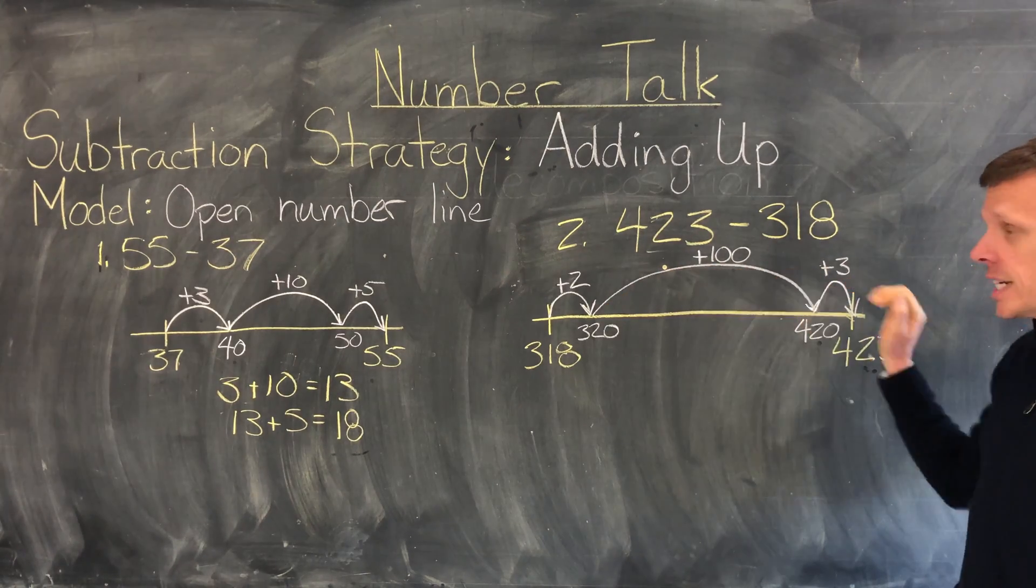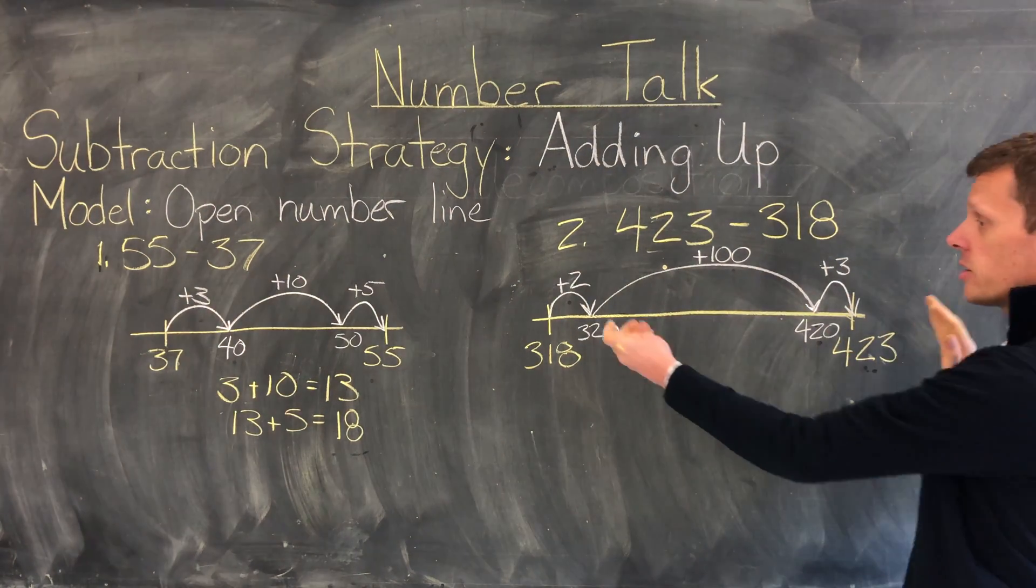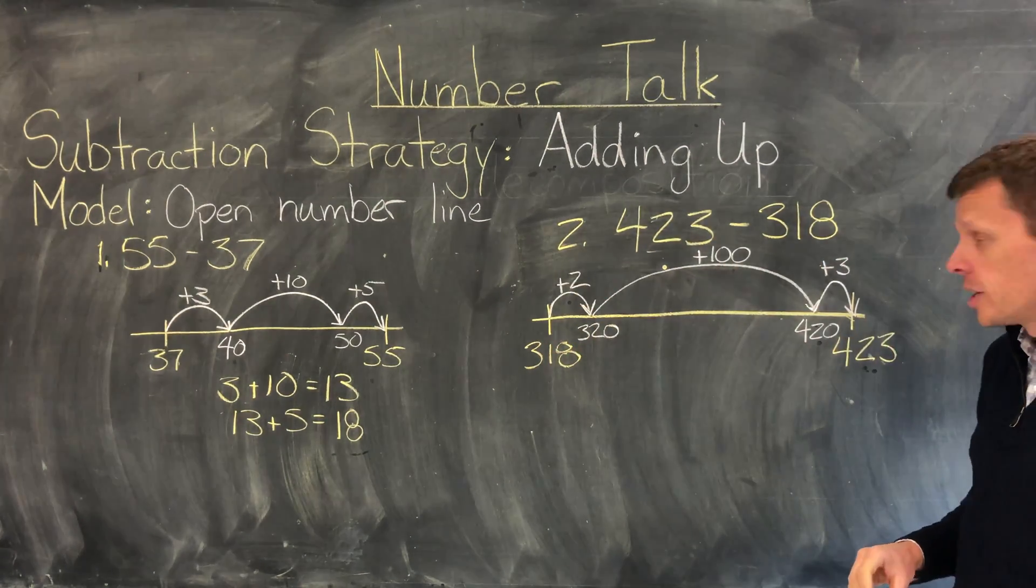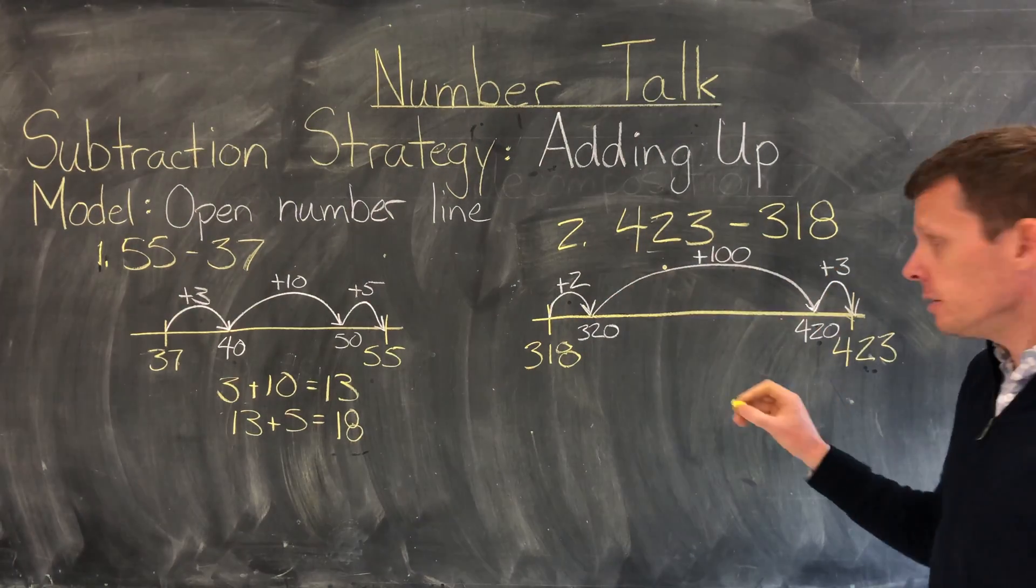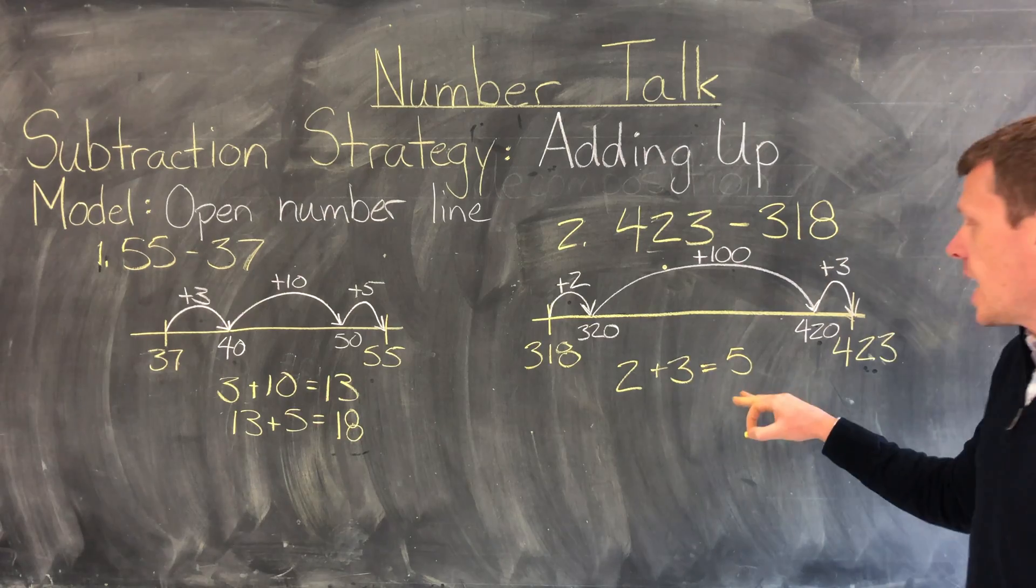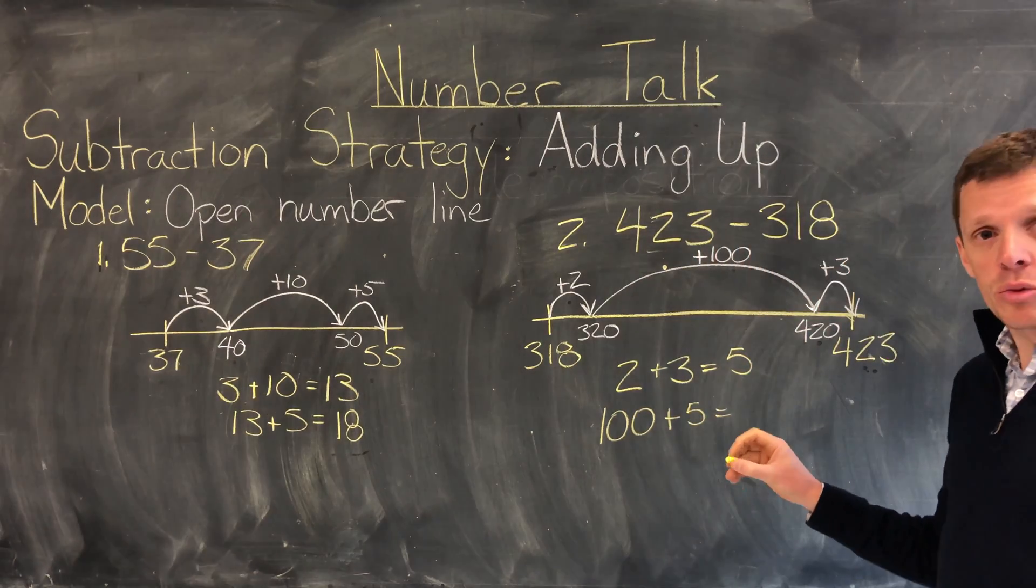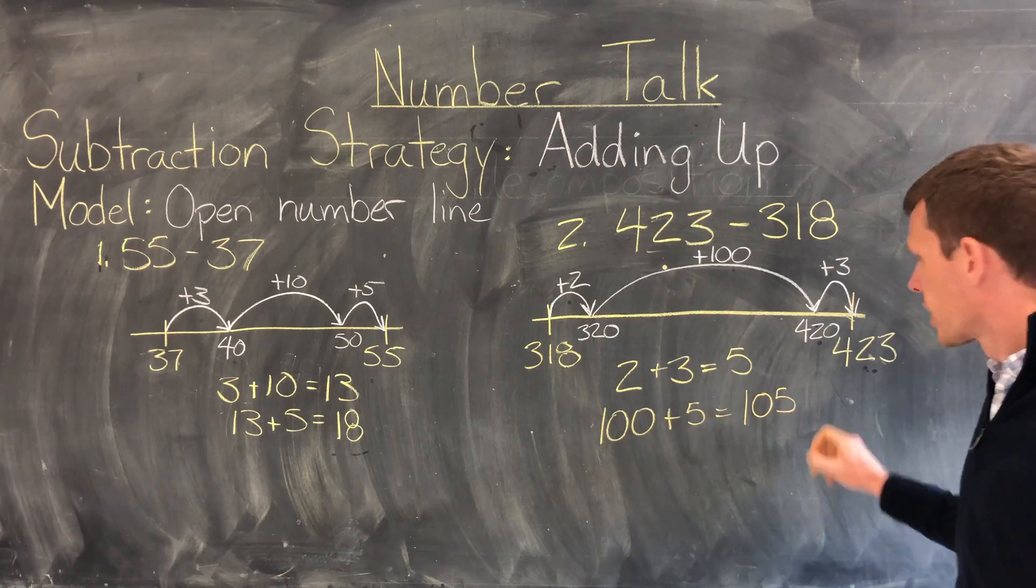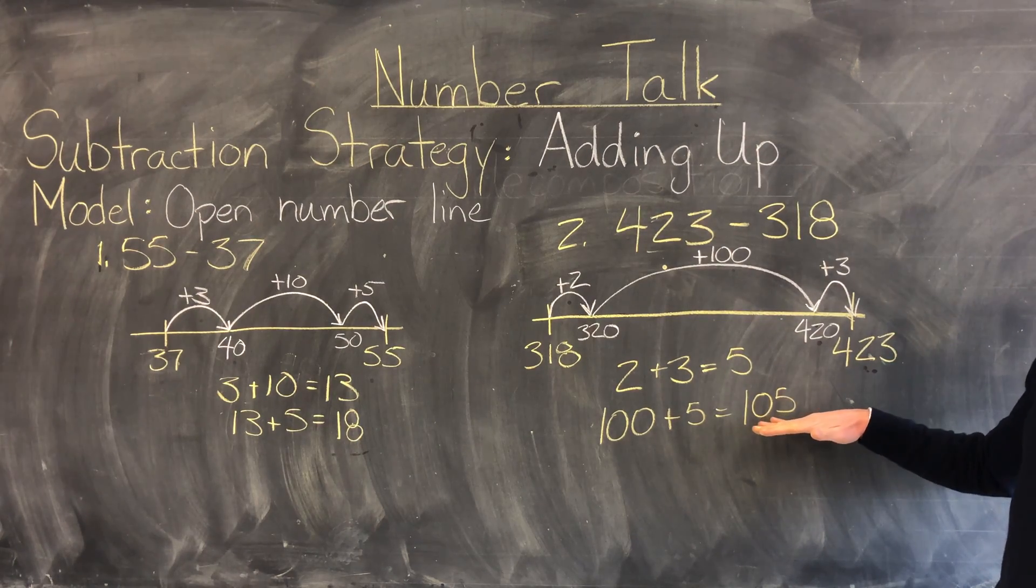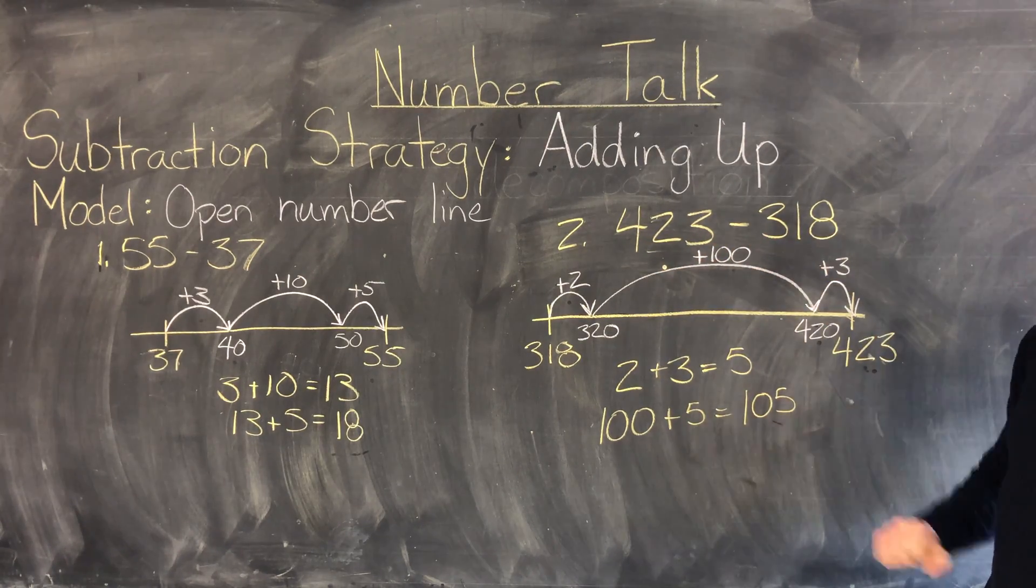Again I'm not complete yet until I add my plus 2, my 100 and my 3 together to get the final answer for the distance that 318 is from 423. So I'm going to start by adding my 2 and 3 together. That equals 5. Now I'm going to add my 5 to 100. And that equals 105. So the distance on the number line from 318 to 423 is 105 or 423 subtract 318 is 105.